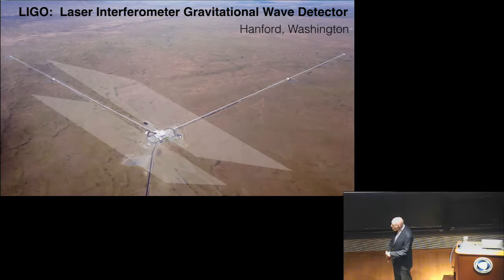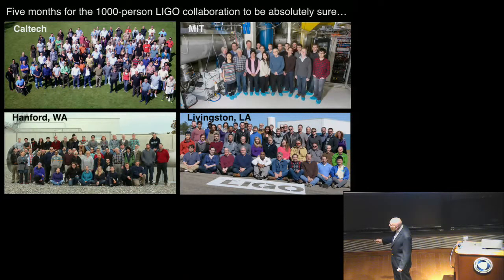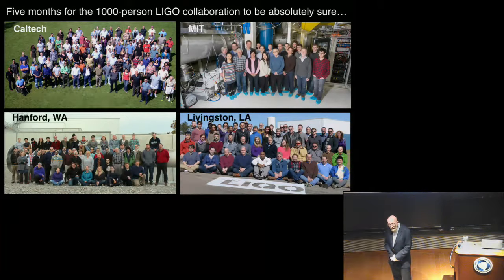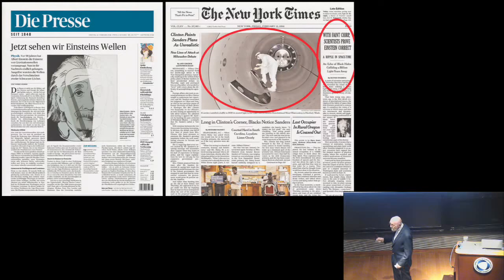Seven milliseconds later — seven one-thousandths of a second — the waves emerged at a gravitational wave detector in Hanford, Washington. They shook these detectors in a manner I will describe in a few minutes, producing a signal that was analyzed for several months by a thousand scientists in the LIGO collaboration. We had to make absolutely sure that what we were seeing was the influence of gravitational waves, because gravitational waves had never ever been seen before by human beings. After months of analysis, we published a paper that made front page headlines in all the major newspapers around the world when announced on February 11, 2016.